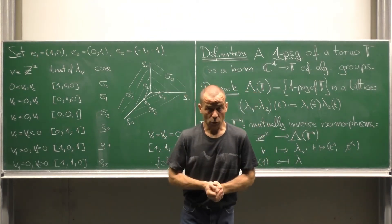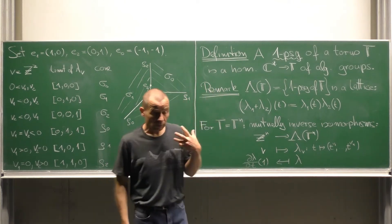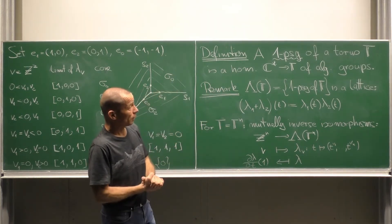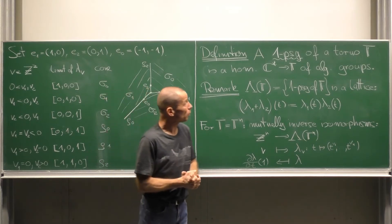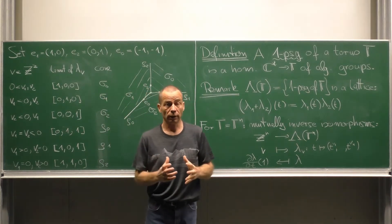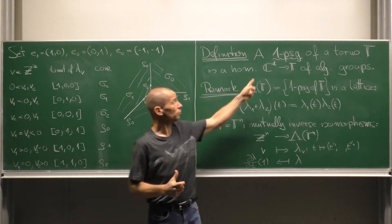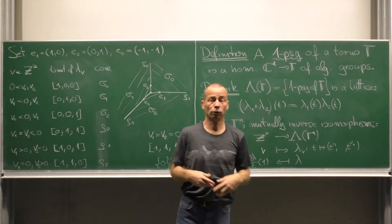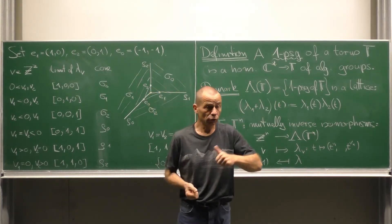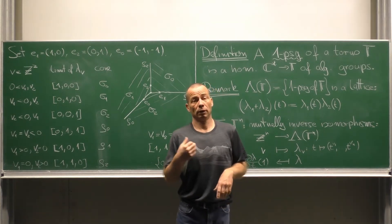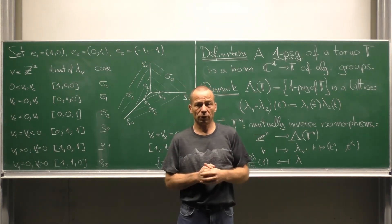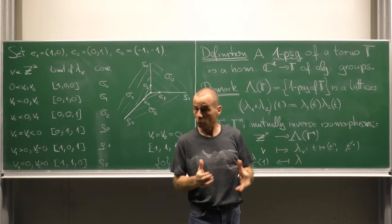Here is the definition of a one parameter subgroup of a torus T. This is a homomorphism from C star to T of algebraic groups. The latter means it is a group homomorphism and it is a morphism of algebraic varieties both together.